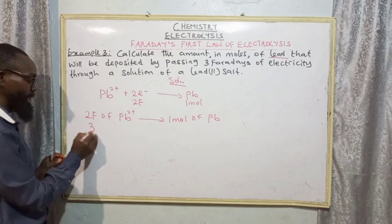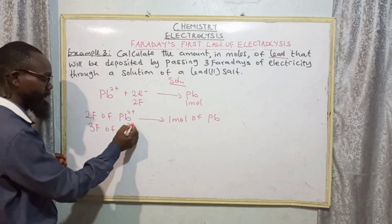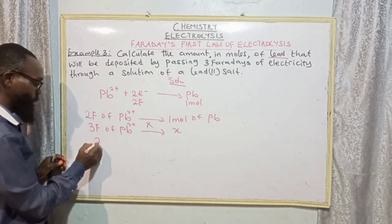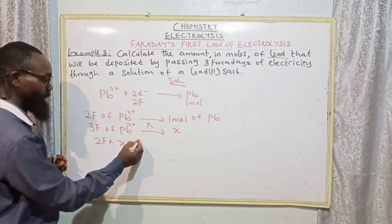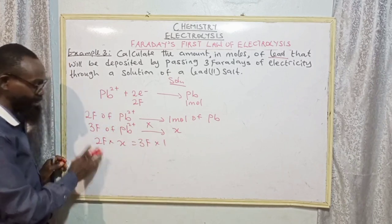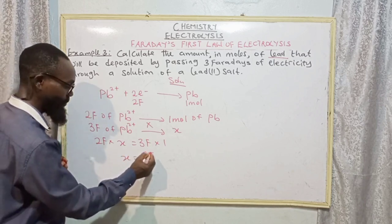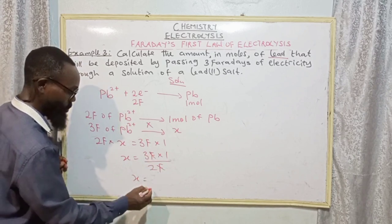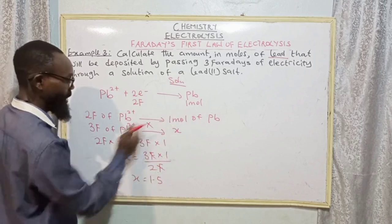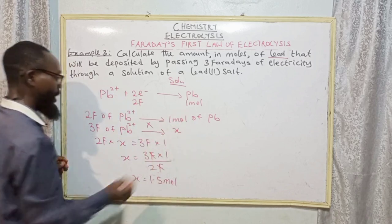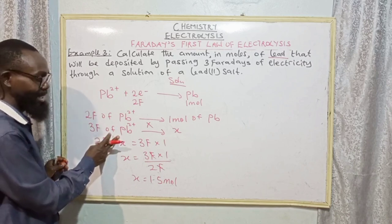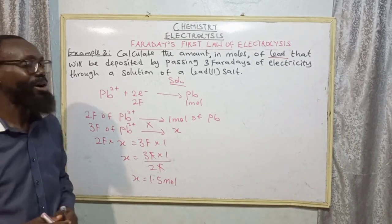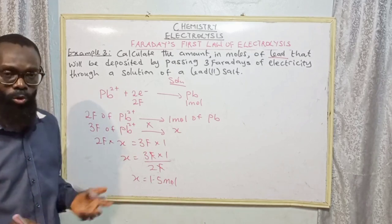So 2 Faradays of Pb²⁺ deposits 1 mole of Pb. Then 3 Faradays of Pb²⁺ — we need to find the unknown x. Cross-multiplying: 2F times x equals 3F times 1. Dividing both sides by 2F, x equals 3F times 1 divided by 2F, which equals 1.5 moles. So 3 Faradays of electricity will deposit 1.5 moles of lead. This is another way of relating mass to mole relationship.